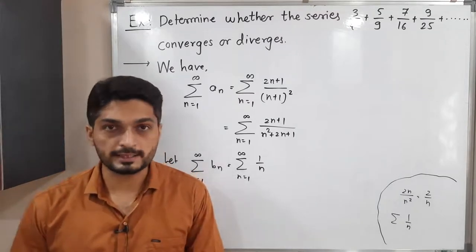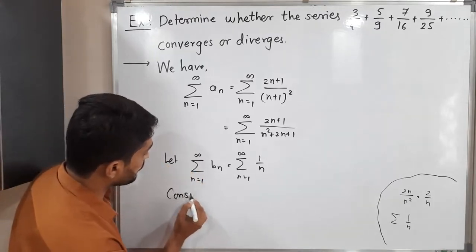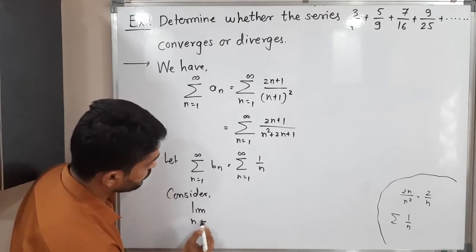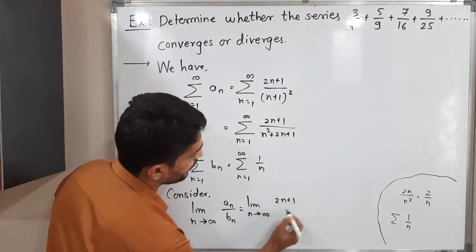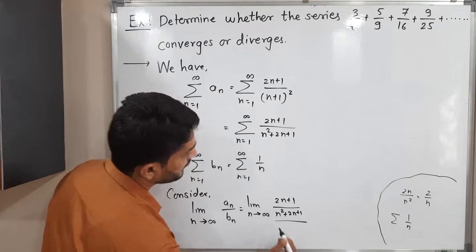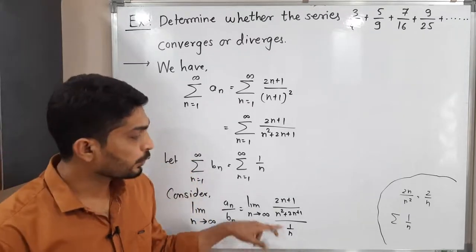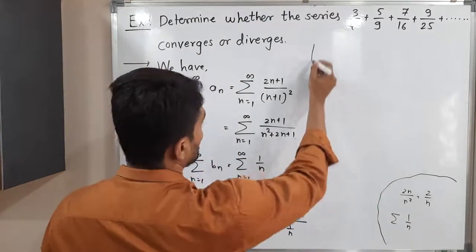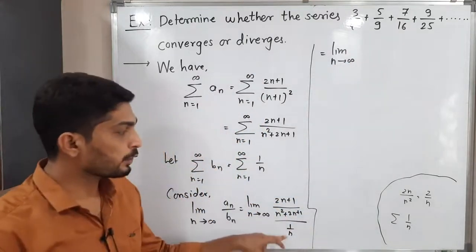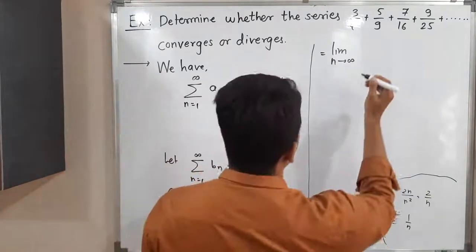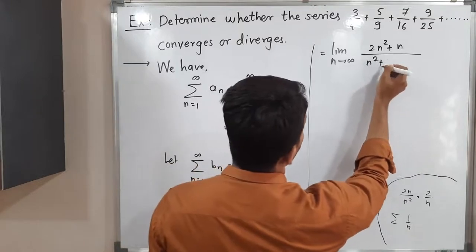In the limit comparison test, we consider the limit as n tends to infinity of an/bn. Substituting the values: an = (2n+1)/(n²+2n+1) and bn = 1/n. Since bn = 1/n is in the denominator, n goes to the numerator. Multiplying gives (2n²+n) divided by (n²+2n+1).